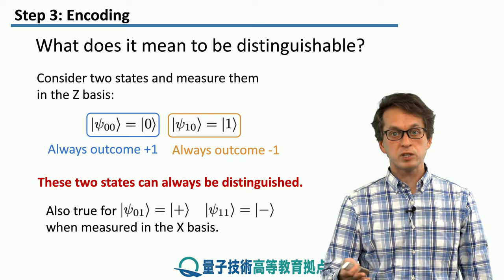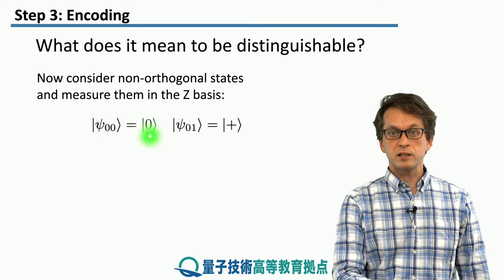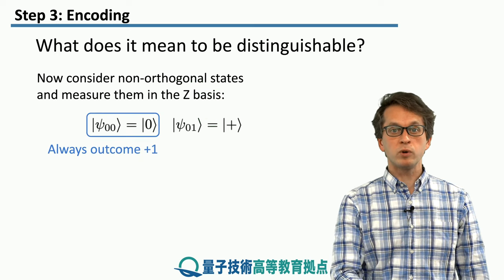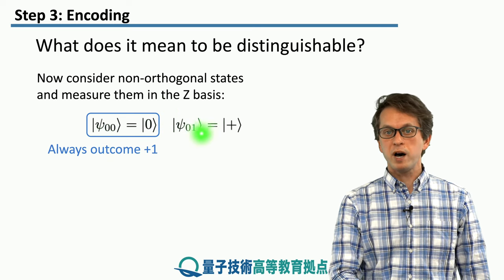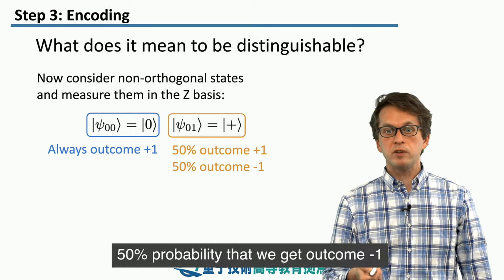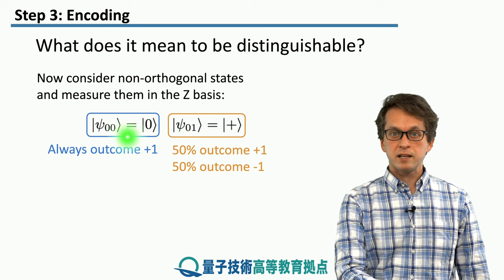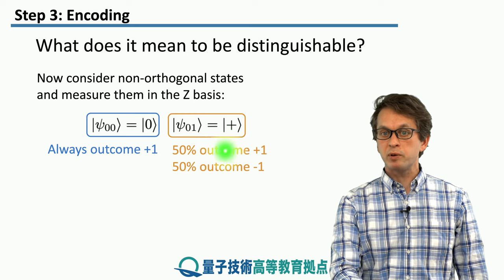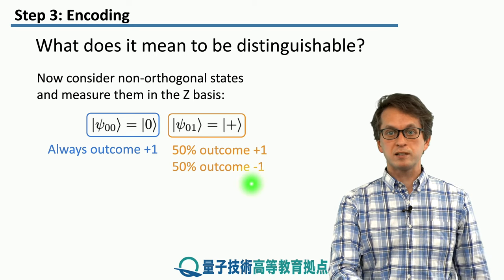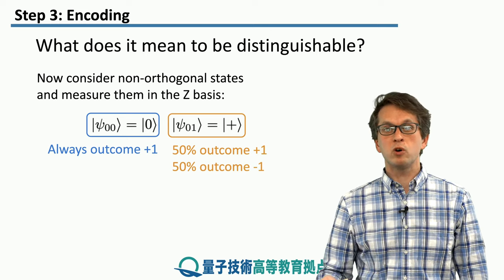On the other hand, if we are given |0⟩ or |+⟩ and measure in the Z basis: measuring |0⟩ always gives +1, but measuring |+⟩ gives +1 with 50% probability and −1 with 50% probability. So if we get −1, we know the state was |+⟩; but if we get +1, we are unsure whether it was |+⟩ or |0⟩. In this sense, the states are non-distinguishable.